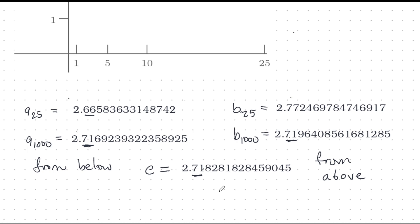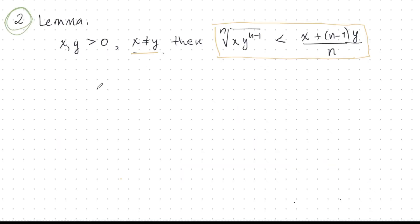To prove what we want to prove, we need a lemma. So the lemma goes like this. If x and y are positive and x is not equal to y, then I have this inequality. Very interesting inequality. Root of this product is less than this thing that looks like a mean. And you think, wow, this is really alien looking inequality. Where does this come from? But it actually just follows from MGM.